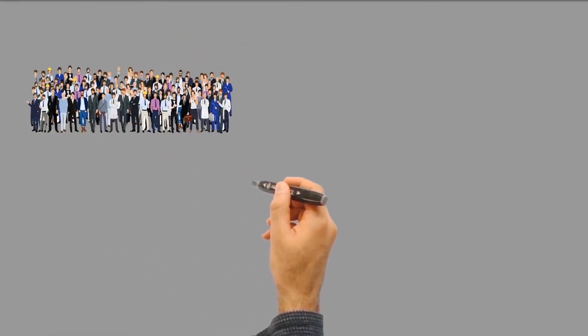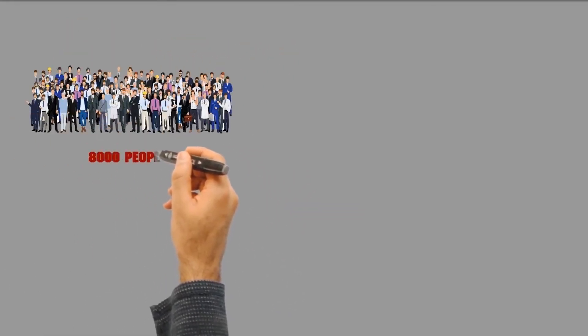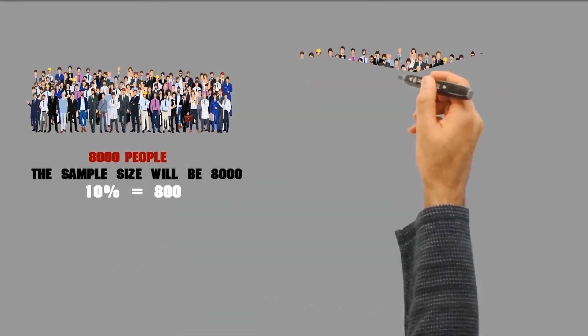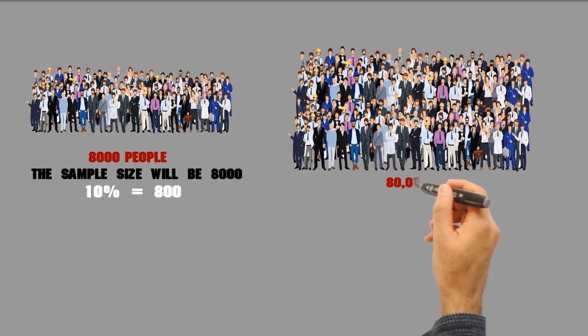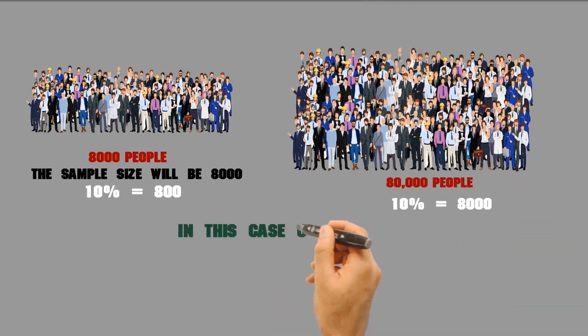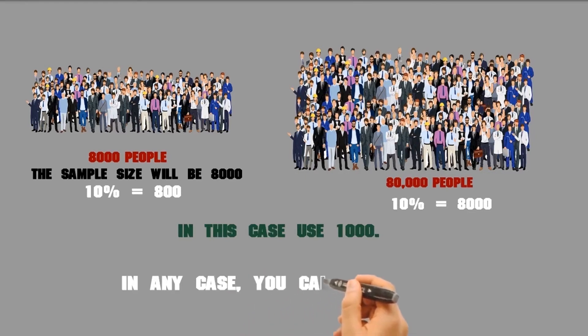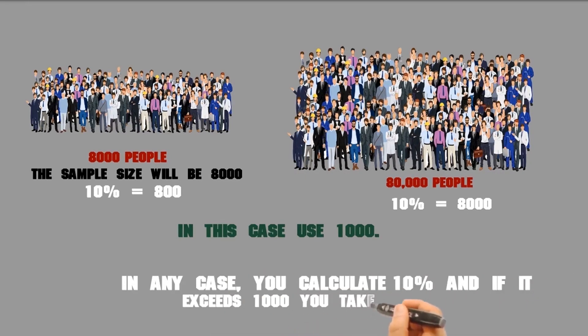For instance, in a population of 8,000, the sample size will be 8,000 times 10% equals 800. In a population of 80,000 times 10% equals 8,000. In this case, use 1000. In any case, you calculate 10%, and if it exceeds 1000, you take 1000.